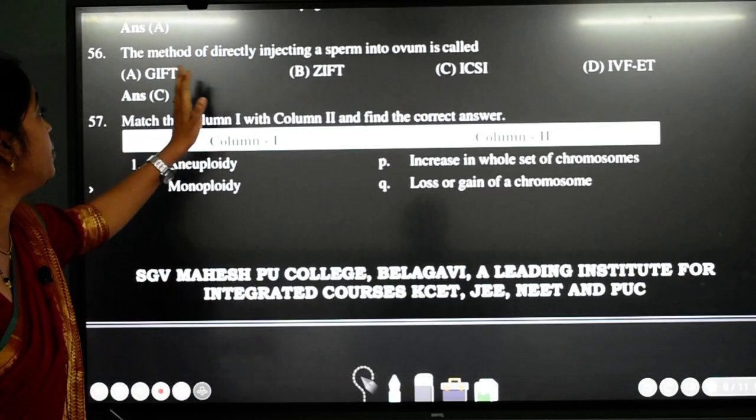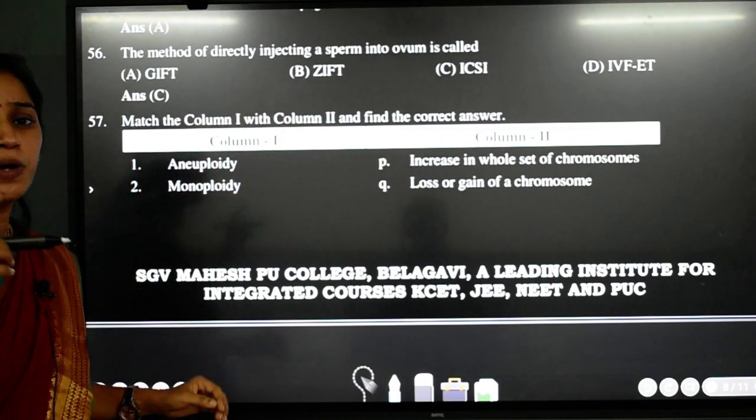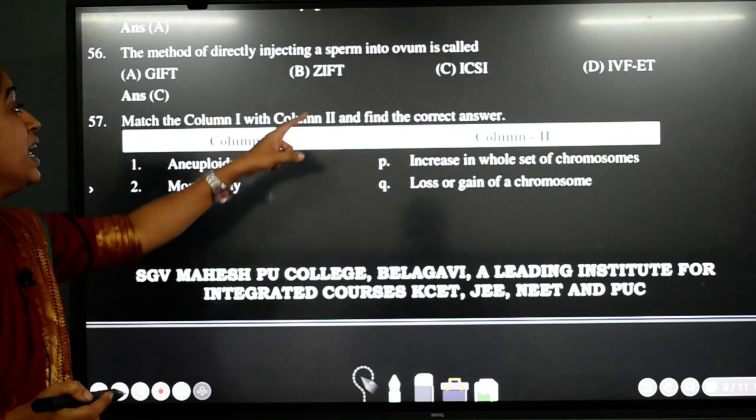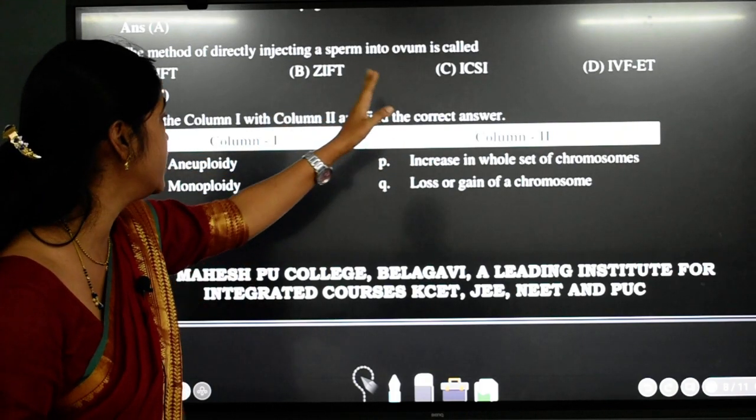56th question here. The method of directly injecting a sperm into the ovum is? See student. Sperm is injected into the ovum in ICSI. That is intracytoplasmic sperm injection. So answer is C.